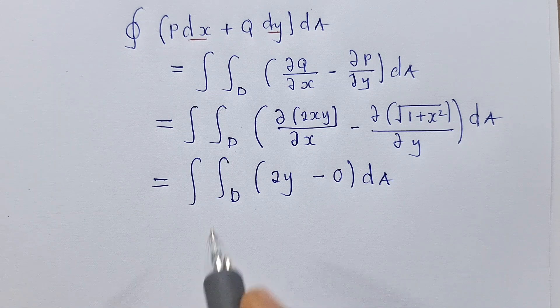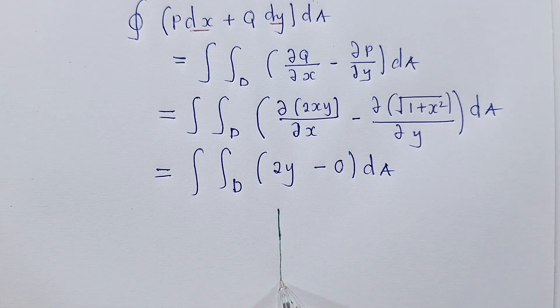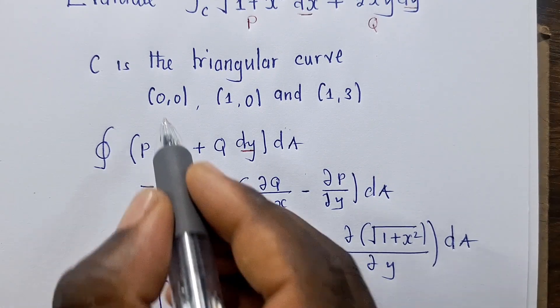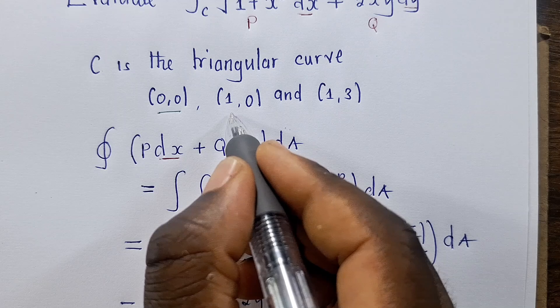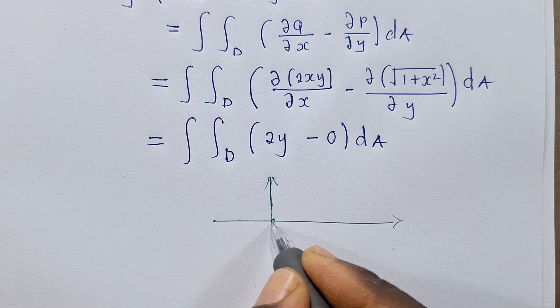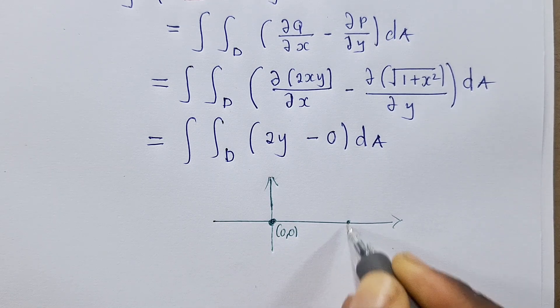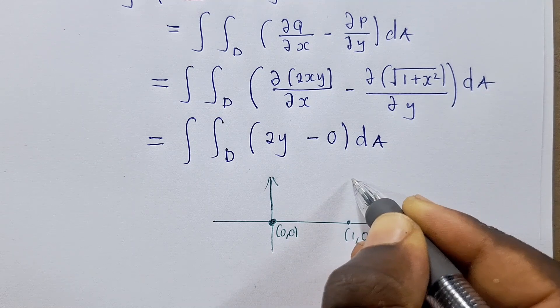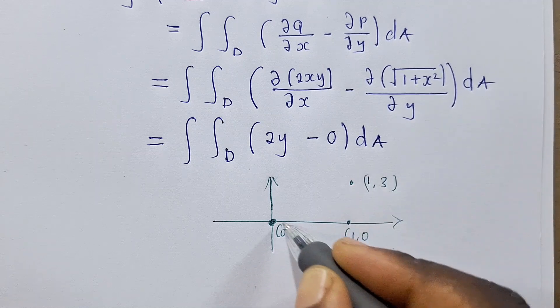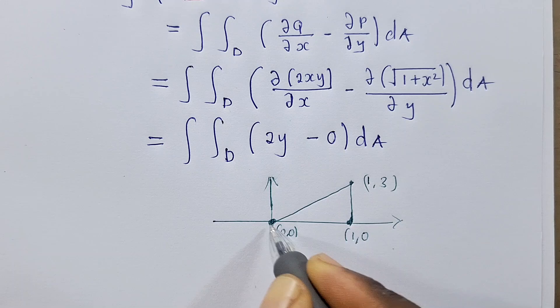We are done with that one. We now come to the region, we need to identify the region. The region will be identified in this manner. We've been given the coordinates: (0,0), (1,0), and (1,3). So (0,0) will be right here, (1,0) will be here, and (1,3) will be somewhere here. This is a triangle we're dealing with.